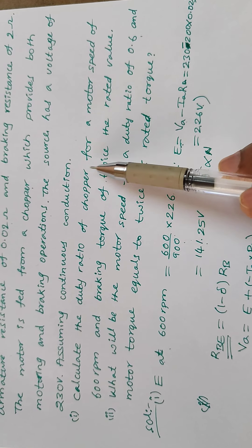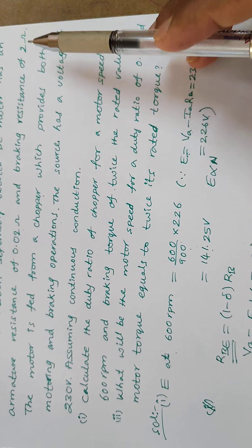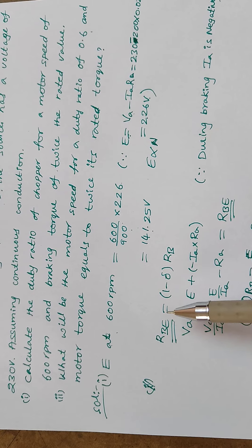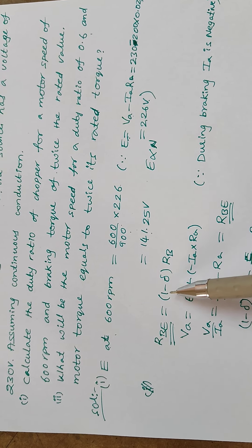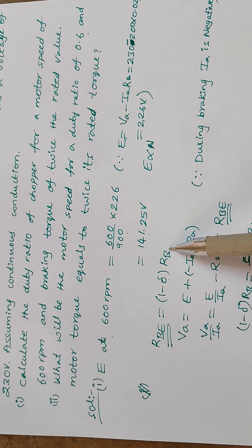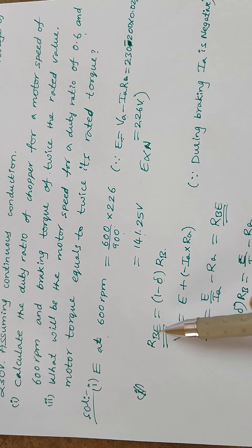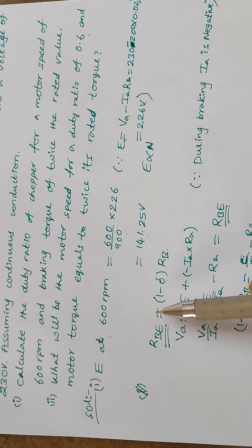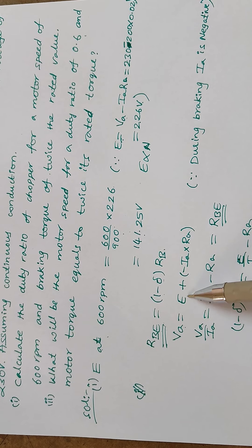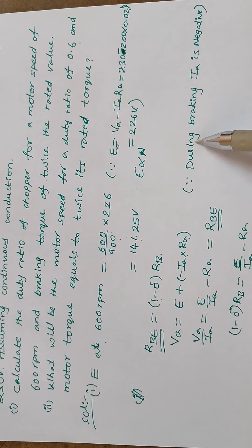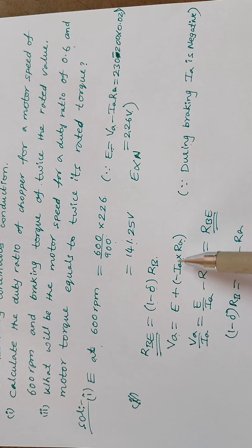Now we need to find the duty ratio of the chopper. The braking resistance is 2 ohms. The effective braking resistance Rb_eff equals (1 minus δ) times Rb. To find the effective braking resistance across the armature terminals, we can also use Va equals E plus Ia times Ra for motoring mode. But since this is braking, Ia is negative, so it becomes E minus Ia times Ra.